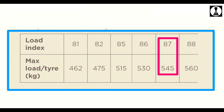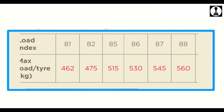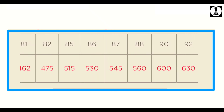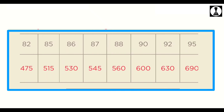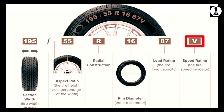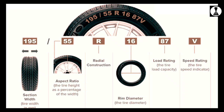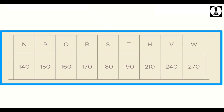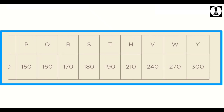In this table, 87 is a load capacity of 545 kg. You can refer to the load index. V is the speed symbol, so you can drive the car at the maximum speed. This table shows 240 kilometers per hour. You can refer to the speed symbol table as well.